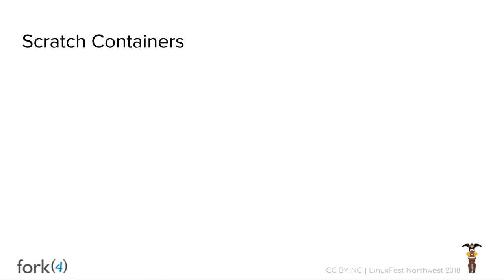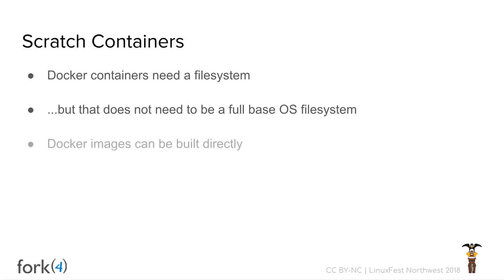Who knows what a scratch container is? Essentially, Docker containers need a filesystem, but that filesystem doesn't need to be inherited from another container or look like a full-blown distribution. If you're running something small or statically linked, you can build the image with only those things you need. You don't need a runtime or all the dependencies your runtime needs. It works like this: 'FROM scratch' is a special type in Docker that tells it to build an empty filesystem — whatever you put in it is the only thing there.